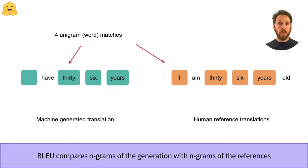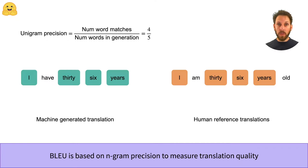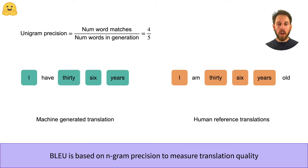In this example you can see that four of the words in the generated translation are also found in one of the reference translations. Once we've found our matches, one way to assign a score to the translation is to compute the precision of the unigrams. This means we just count the number of matching words in the generated and reference translations and normalize the count by dividing by the number of words in the generation. In this example we found four matching words and the generation has five words.